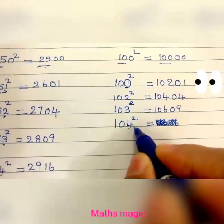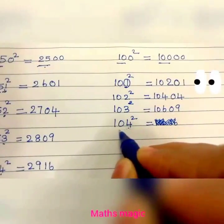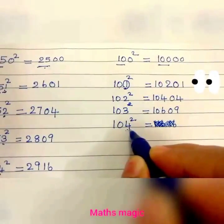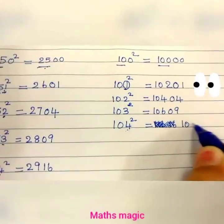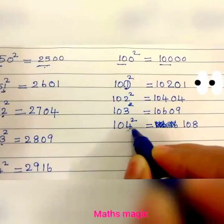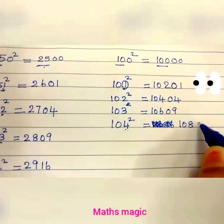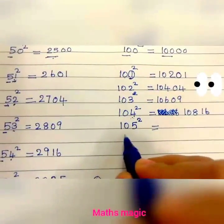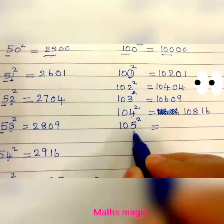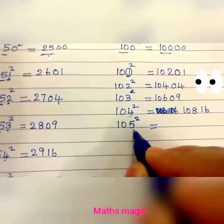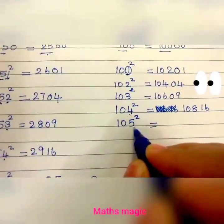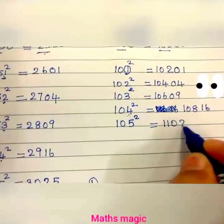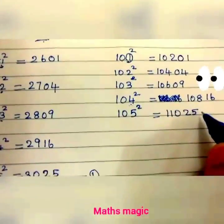For 104 squared: double 4 is 8, so 100 plus 8 is 108. Then 4 squared is 16. So 104 squared is 10,816. For 105 squared: double 5 is 10, so 100 plus 10 is 110. And 5 squared is 25. So 105 squared is 11,025.